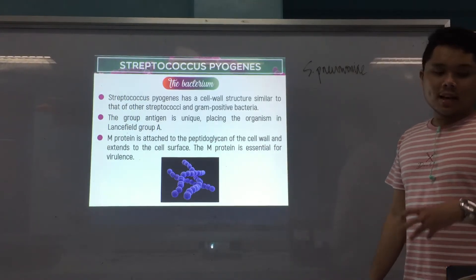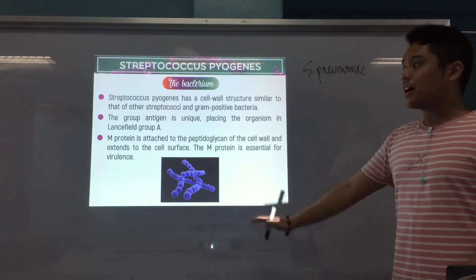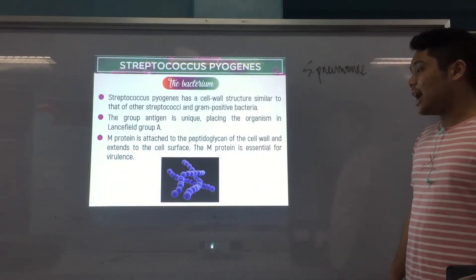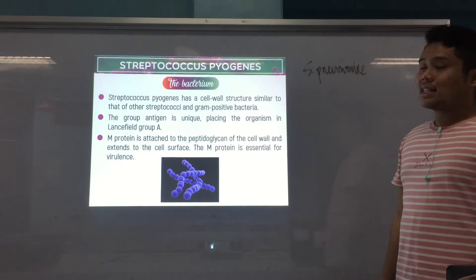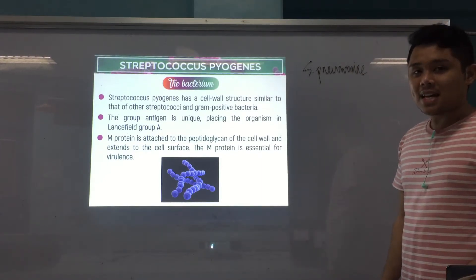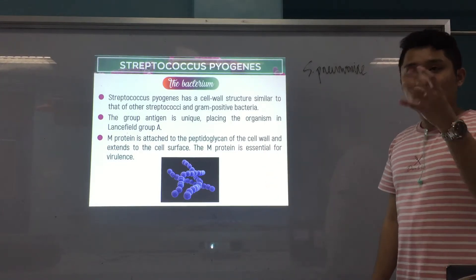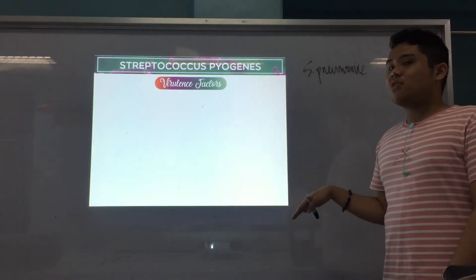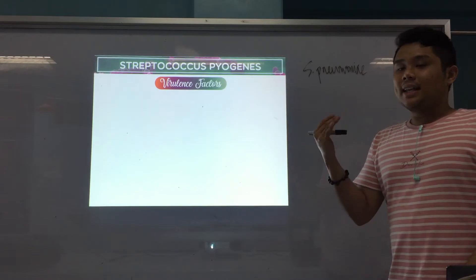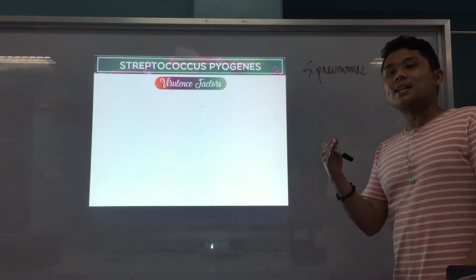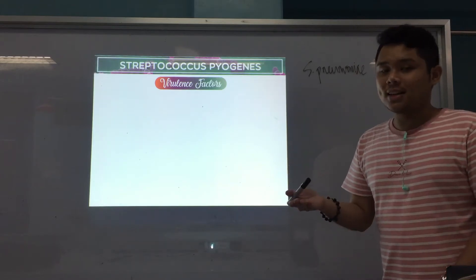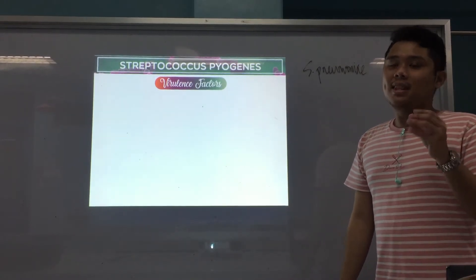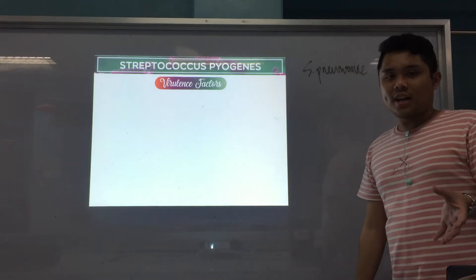One of the most important and potent virulence factors of Strep pyogenes is the M protein, attached to the peptidoglycan of the cell wall and extending to the cell surface. M protein is essential for virulence. We're going to discuss the virulence factors of Strep pyogenes because it is against these factors that the body creates antibodies, which we then test serologically.